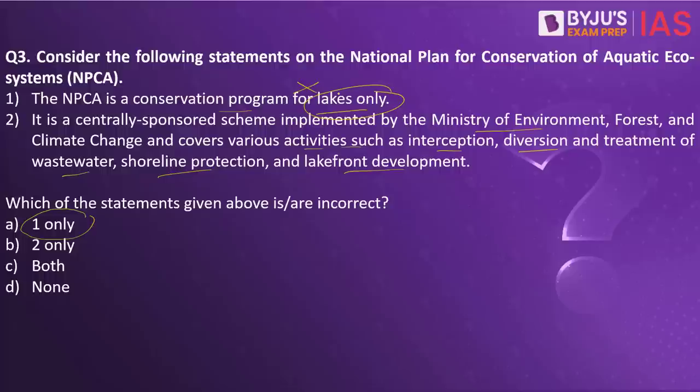The second statement is right. A centrally sponsored scheme involves contributions made by both the central government and state governments on a cost-sharing basis. Under the NPCA scheme, central assistance is based on proposals received from state governments. These proposals must be in line with guidelines given by the central government and must meet budget availability. So the second statement is right, and the first statement is wrong — the answer is 1 only, since it is asking for the incorrect statement.